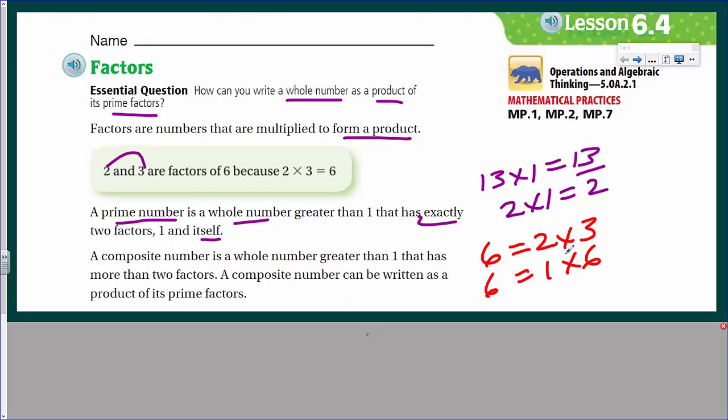It has 4 factors. However, it can be written, as it states here, as its prime factors. That would be 2 and 3. As you can see, 2 times 3 is 6. And both 2 and 3 are prime numbers, according to this definition. It has exactly 2 factors. 2 and 3.